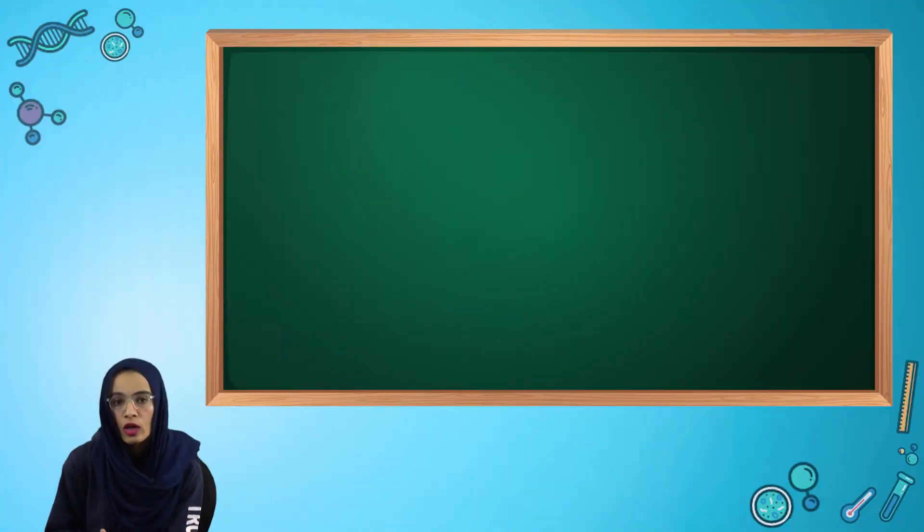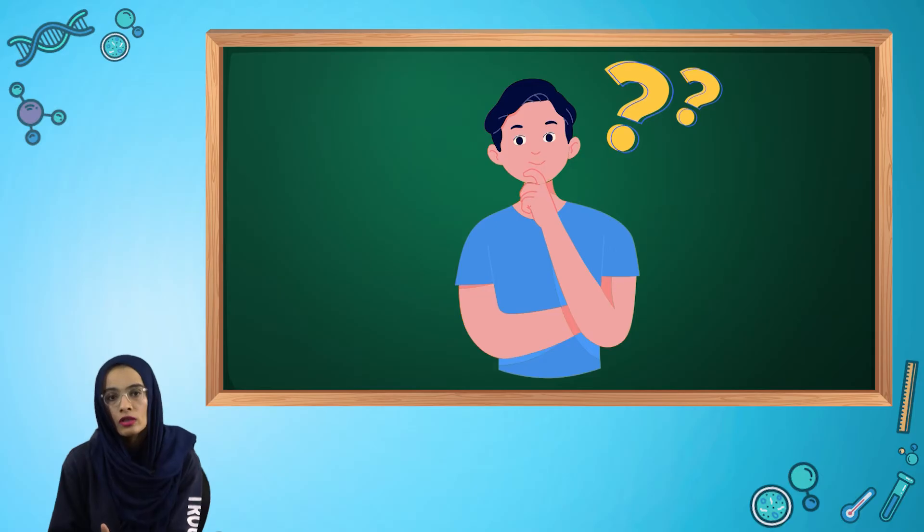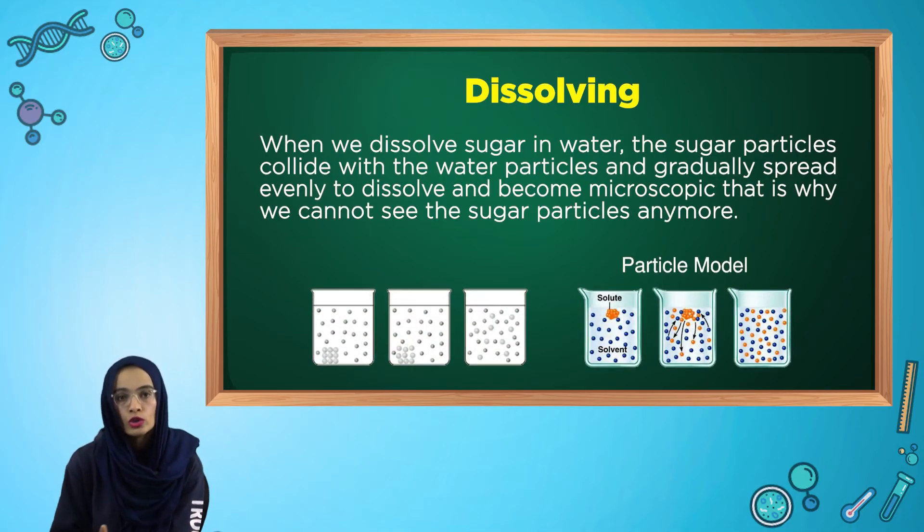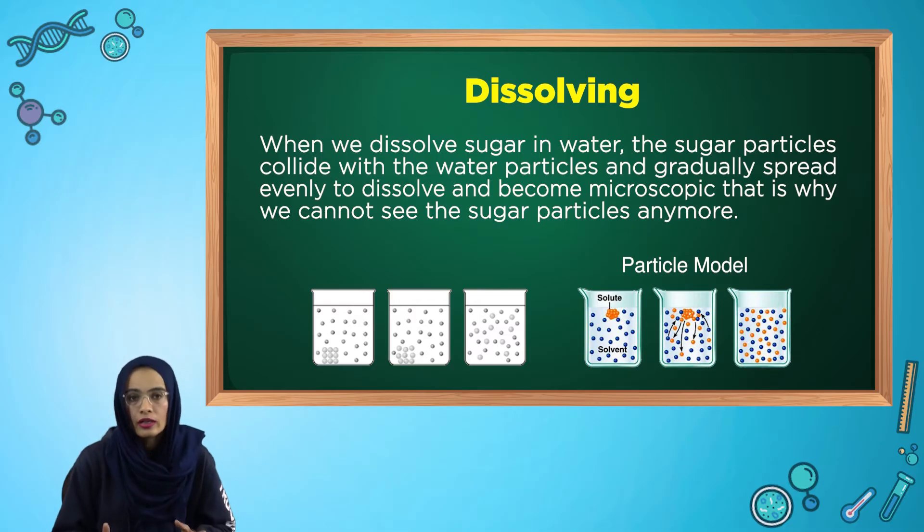After watching the video, I'm sure you are wondering where did the sugar go when we were mixing it? The answer is dissolving. When we dissolve sugar in water, the sugar particles collide with water particles and gradually they spread evenly in this solution and become microscopic. That is why we cannot see the sugar particles anymore.